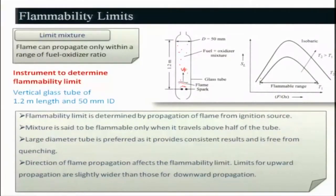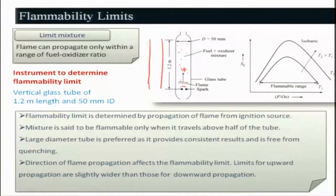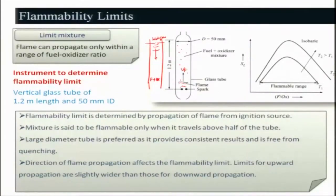The direction of flame propagation affects the flammability limit because of the buoyancy effect — hot gases try to rise, causing acceleration and expansion. For downward flame propagation, where you ignite at the top and the flame travels downward, the hot gases go upward and do not affect the flame propagation. Therefore, flammability limits for upward propagation are slightly wider than those for downward propagation — that is important to keep in mind.